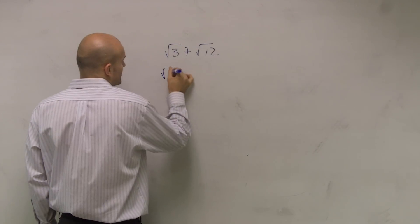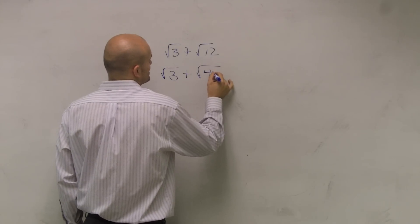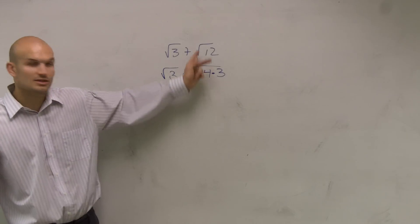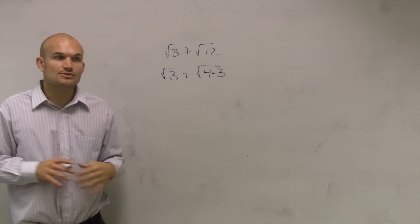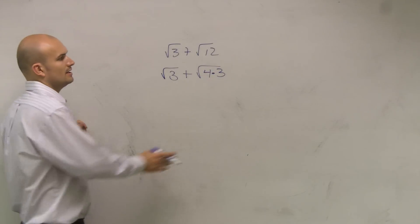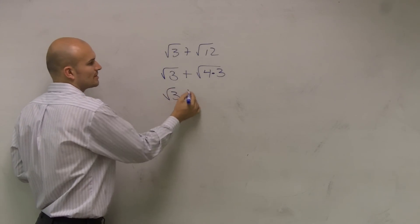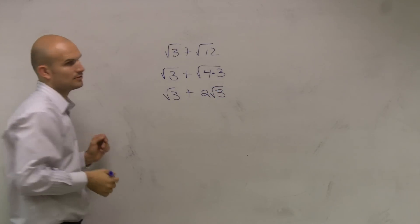So what I do is I'm rewriting radical 12 as the square root of 4 times 3. If you look at this, mathematically this is still exactly the same. 4 times 3 is still equal to 12. But now what's so important and helpful about this is now I can take the square root of 4 which is going to be 2. So I have radical 3 plus the square root of 4 which is 2 times radical 3.